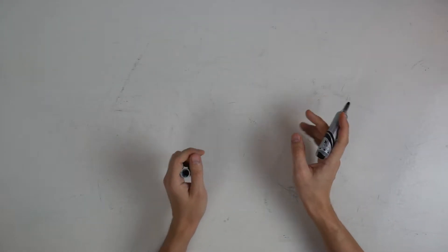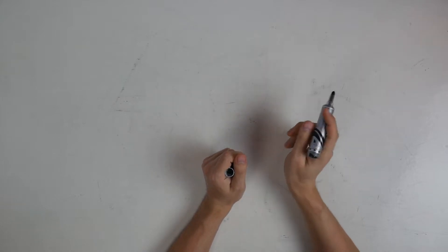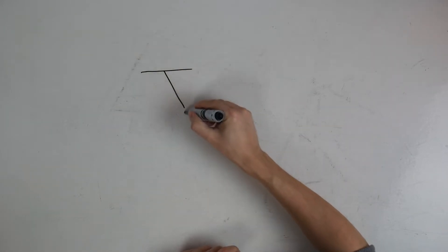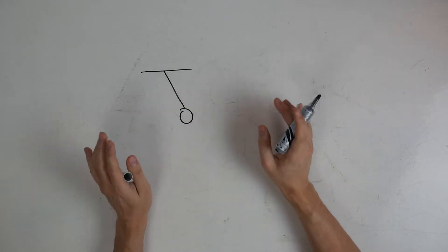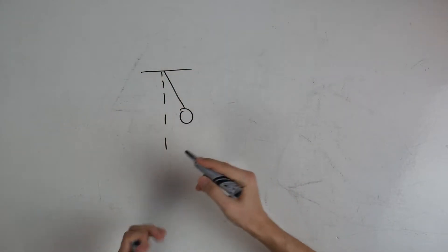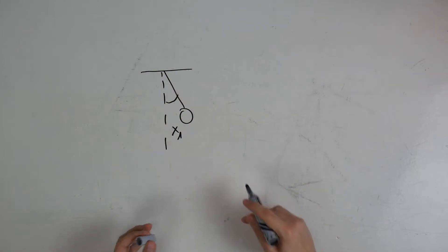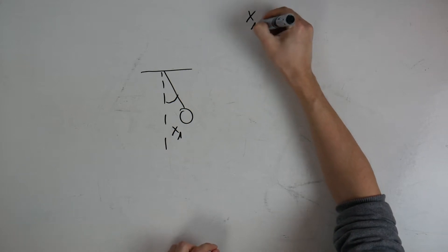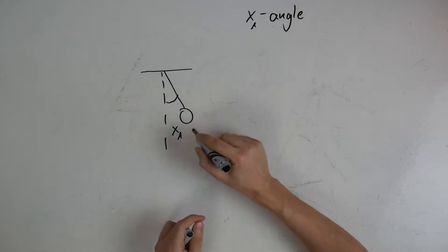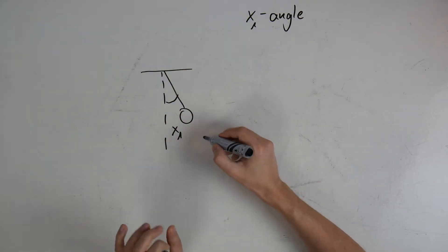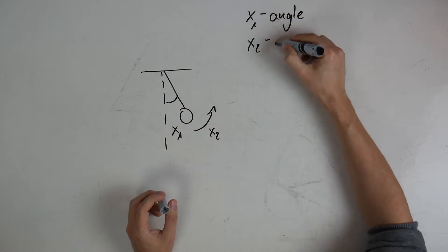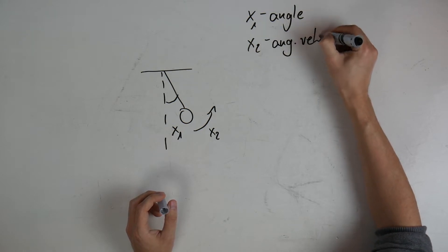When describing the movement of a dynamical system, it is very common to use something called the phase plane plot. When you are given a system, for example a simple pendulum, you know that there is a minimum number of states needed to describe its movement. First, we introduce an angle, which I will call x1. After that, we introduce the angular velocity, which I will name x2.